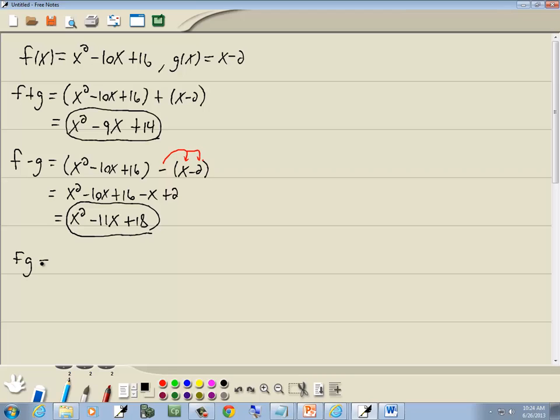Now, f times g, multiplication. Again, I'll put parentheses around them, put them next to each other. So I have x squared minus 10x plus 16 times x minus 2. I'm going to start with my second set of parentheses. I'll take the x, the first term, and multiply it times each term in my first set of parentheses. And I'll take my negative 2 and multiply it times each term in the first set of parentheses.